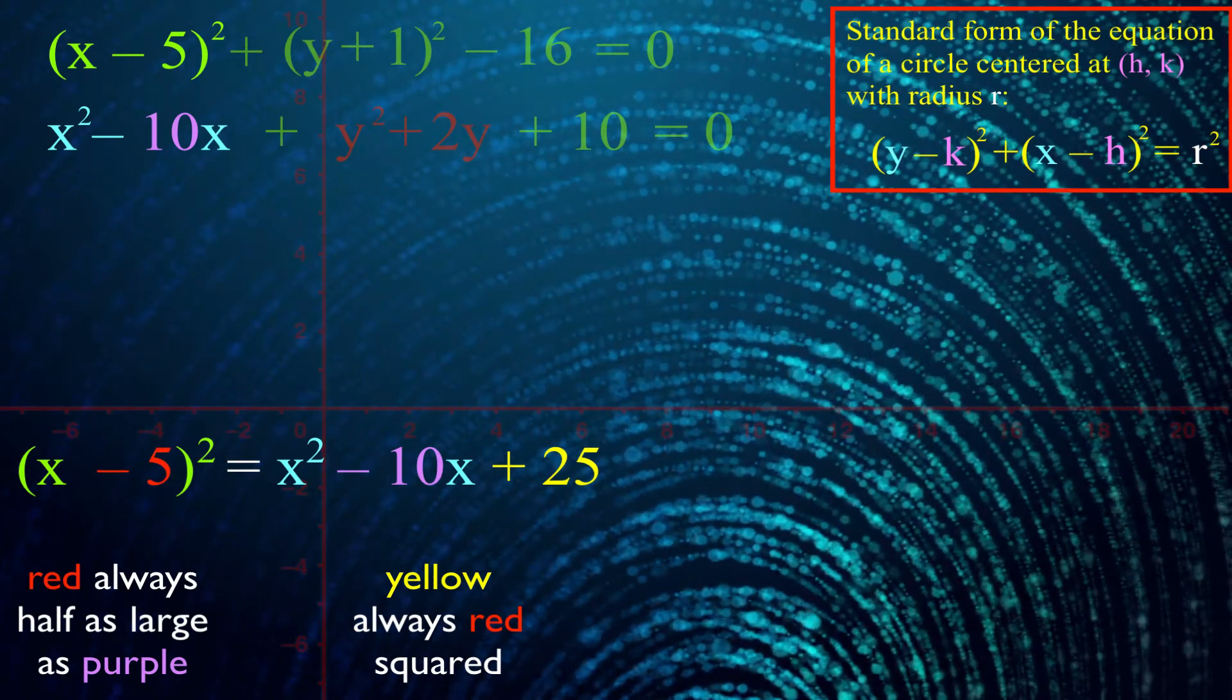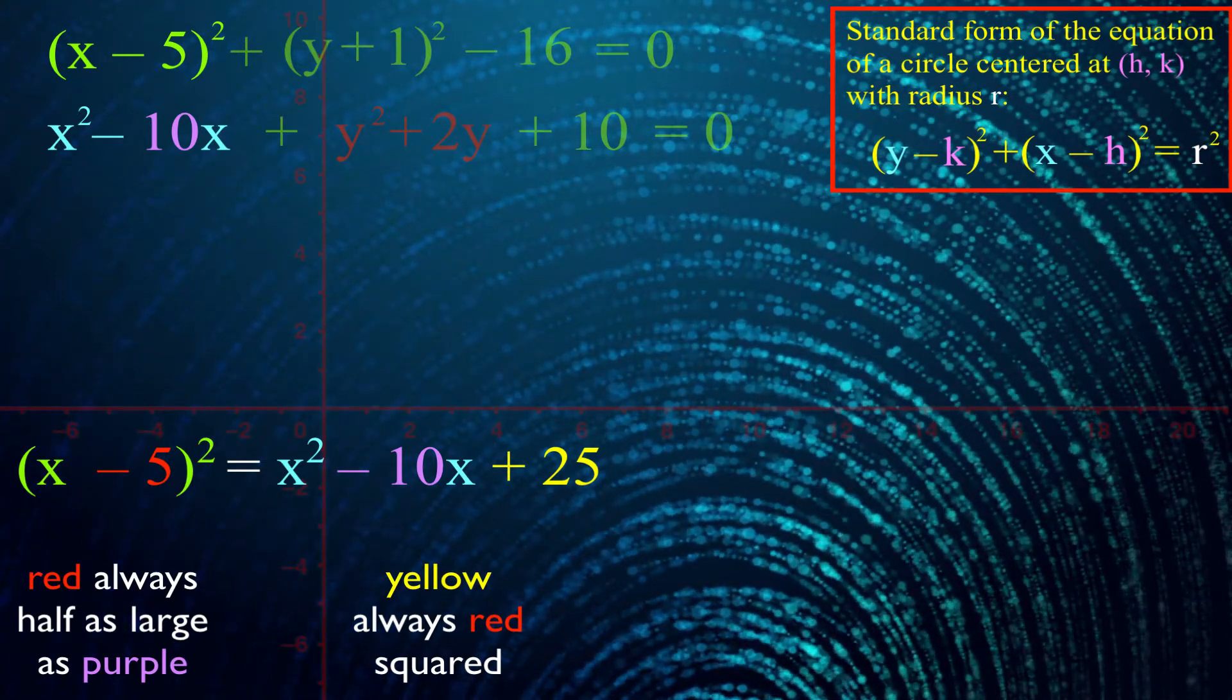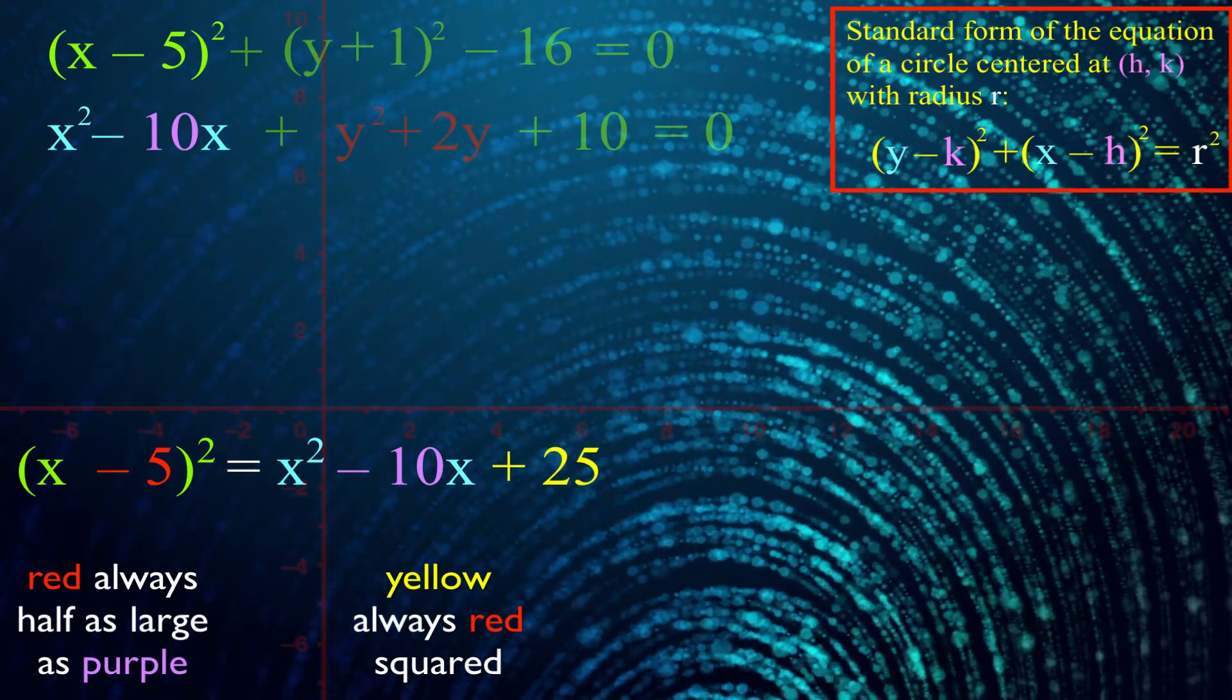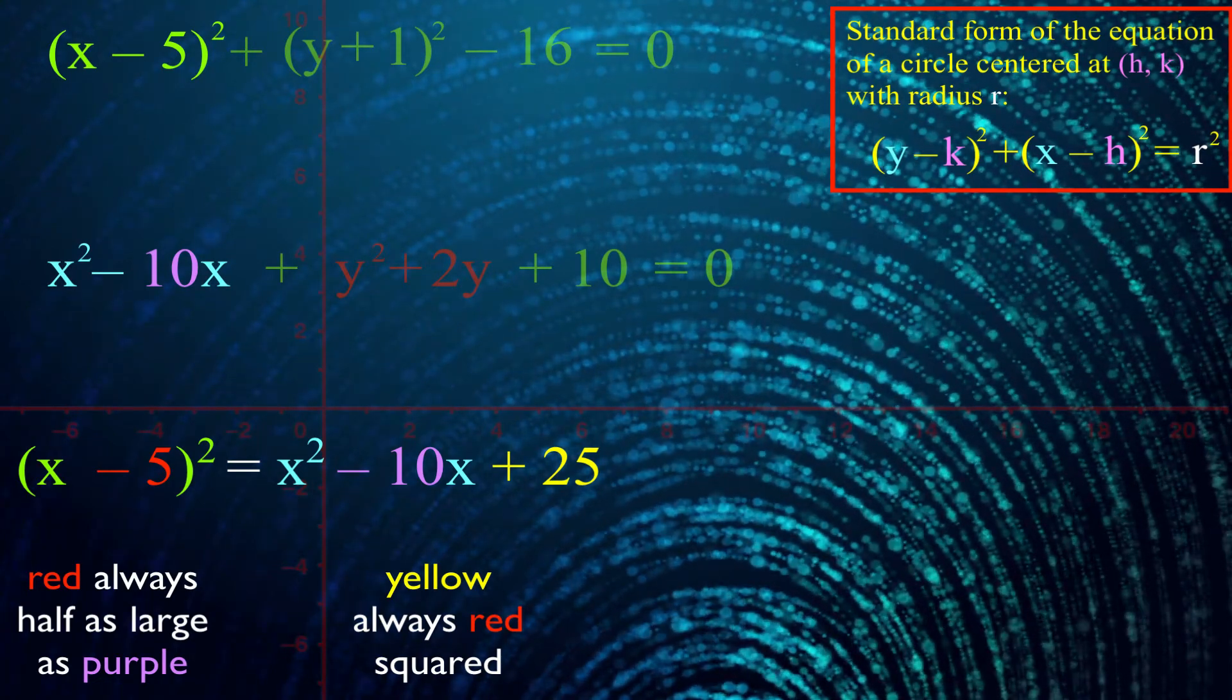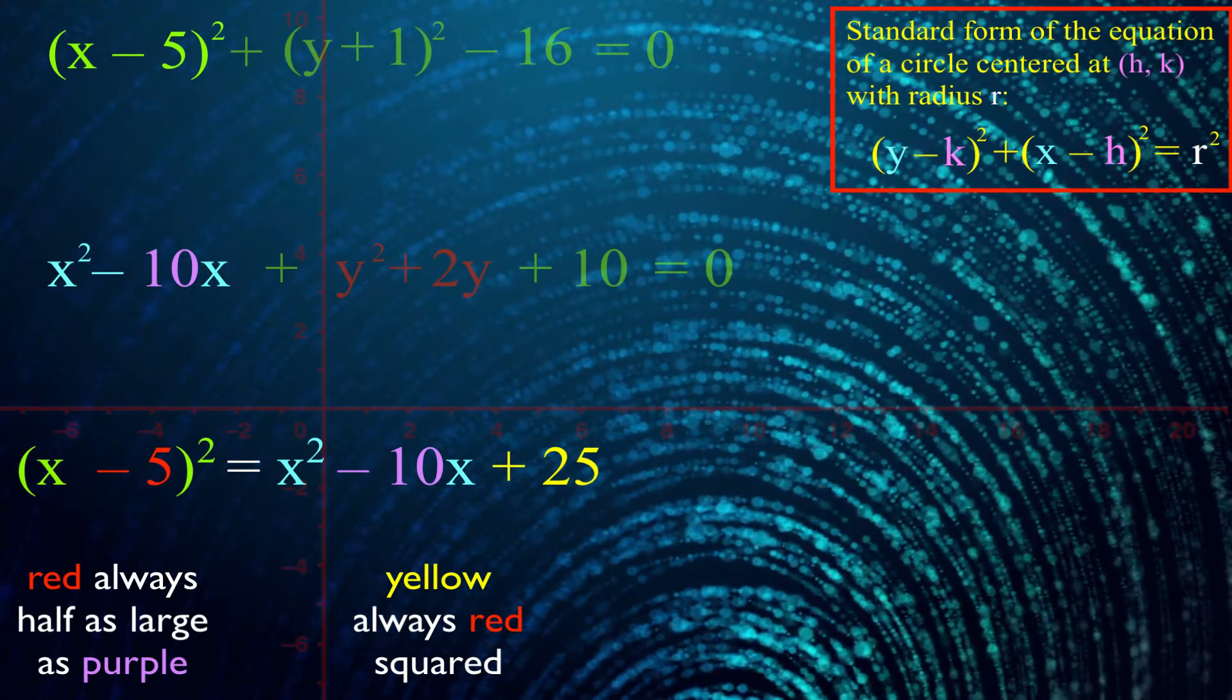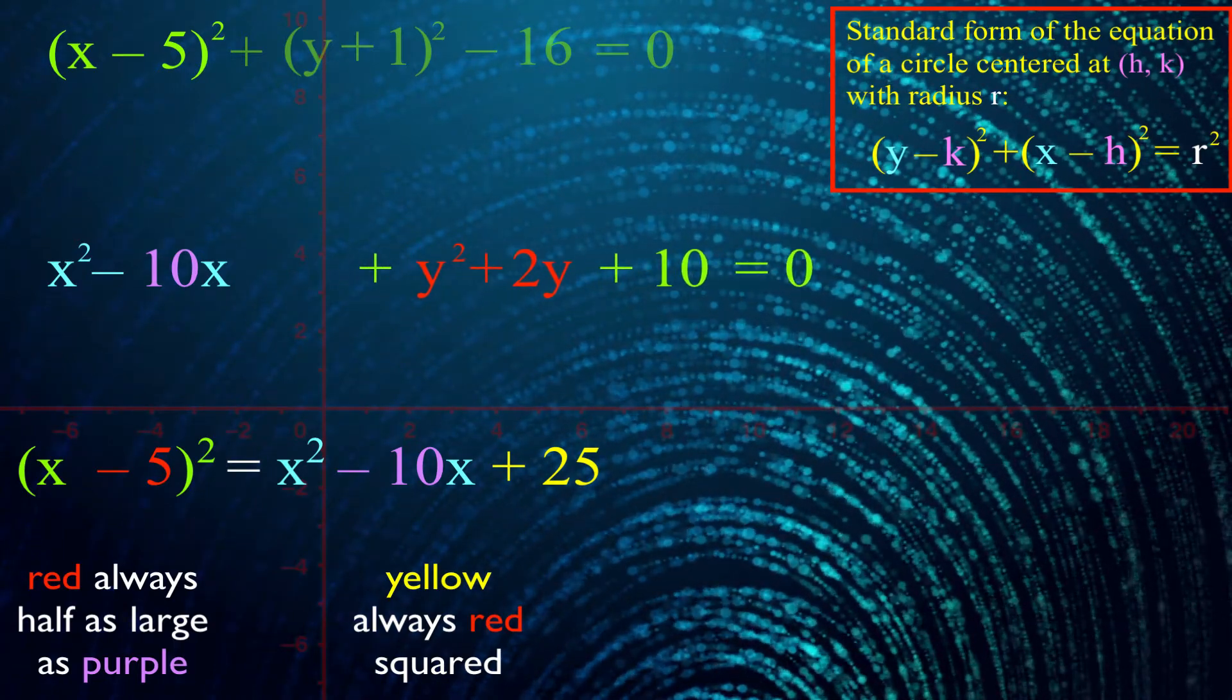But what does this tell you? Well, think about what equality means. It's saying that x minus 5 squared is the exact same as x squared minus 10x plus 25. So if I'm lucky enough to have x squared minus 10x plus 25 somewhere in my equation, I can change that to x minus 5 squared because those two things are equal. I see the x squared and the minus 10x, but I don't see a 25. But don't worry about it. You've got an equation. You can always add or subtract numbers to both sides of the equation. So let's just add 25 to both sides.